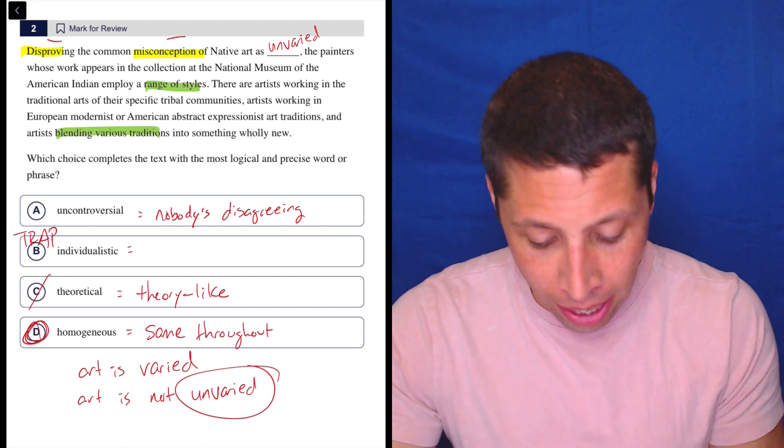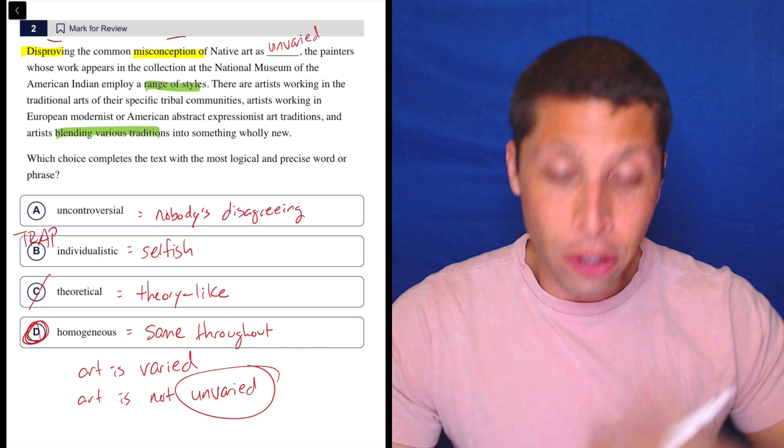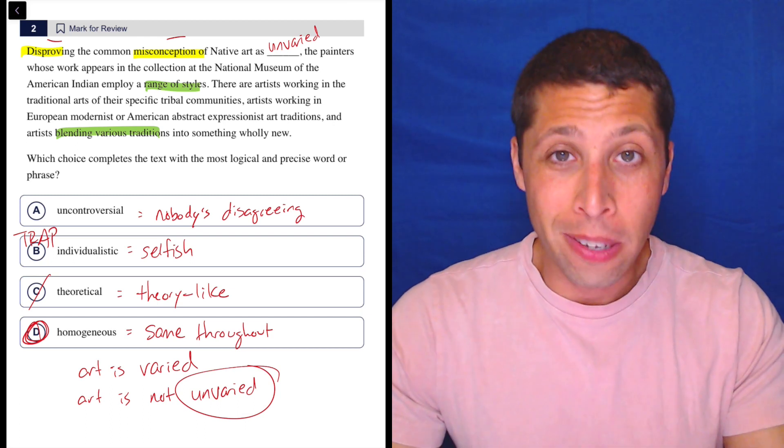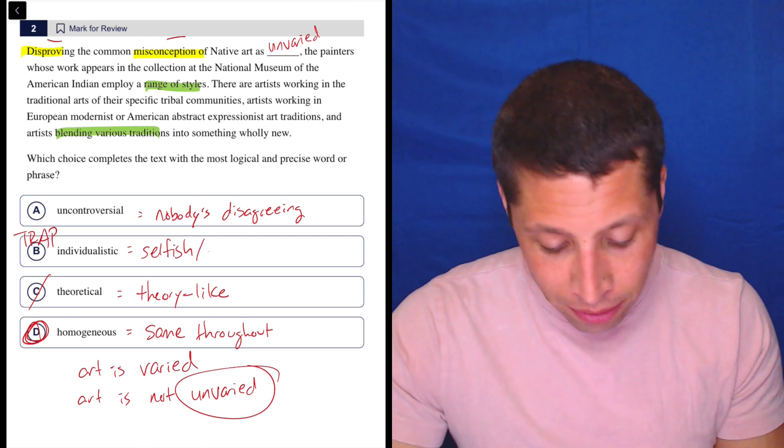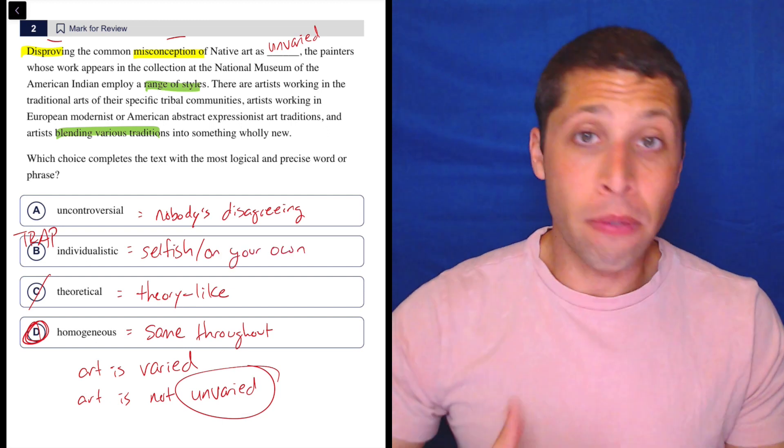What does individualistic mean? It kind of means you are selfish in a way. You're doing something kind of on your own. So maybe selfish or just maybe kind of on your own.